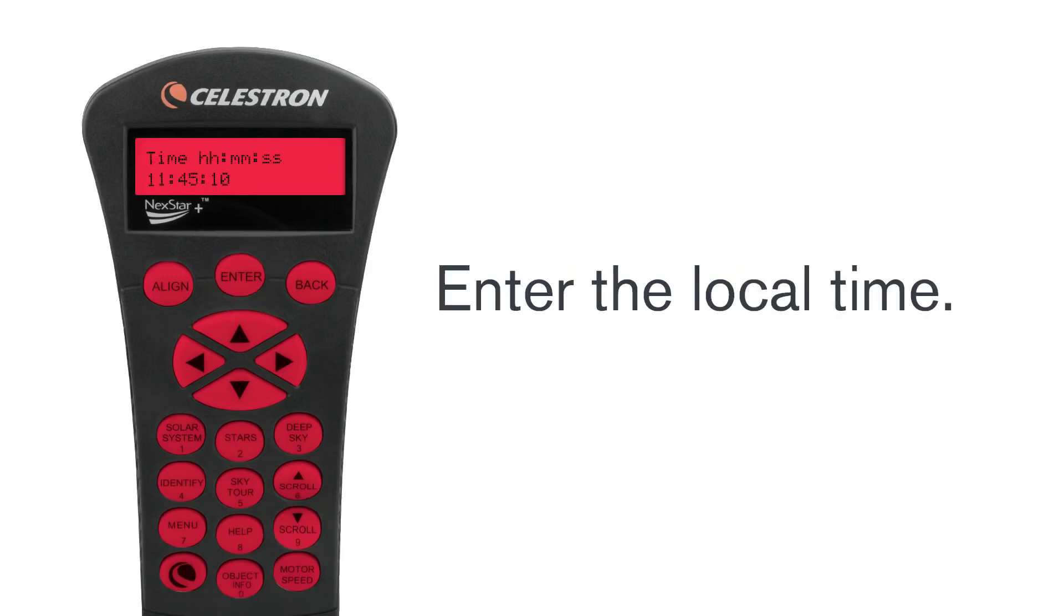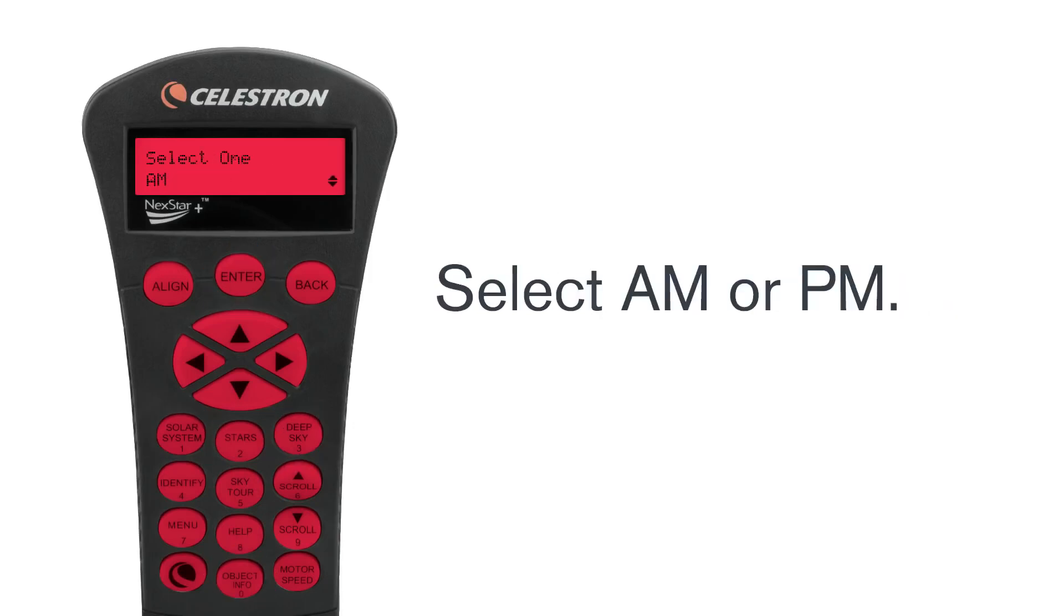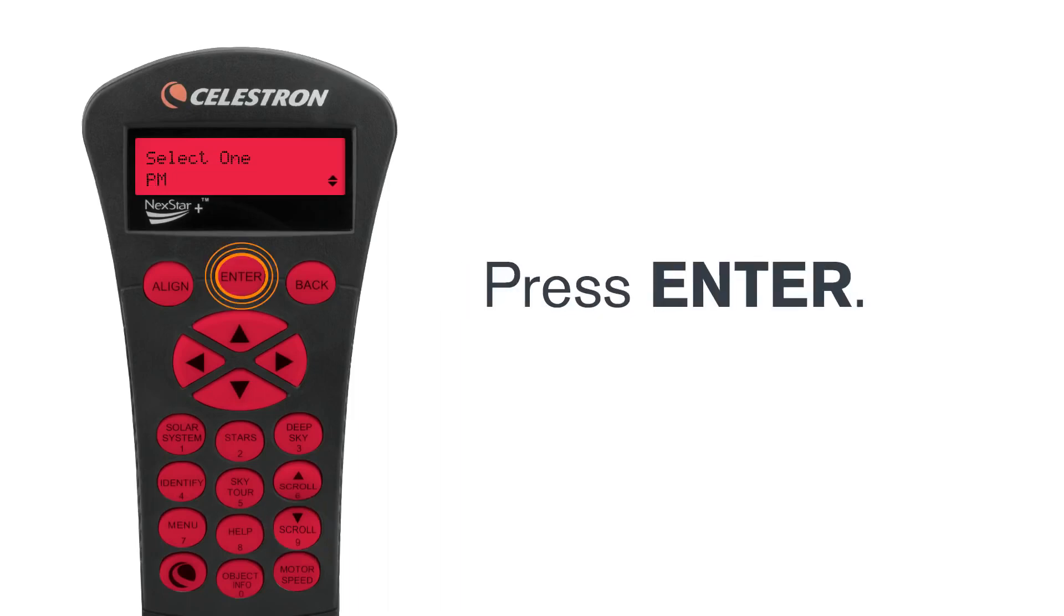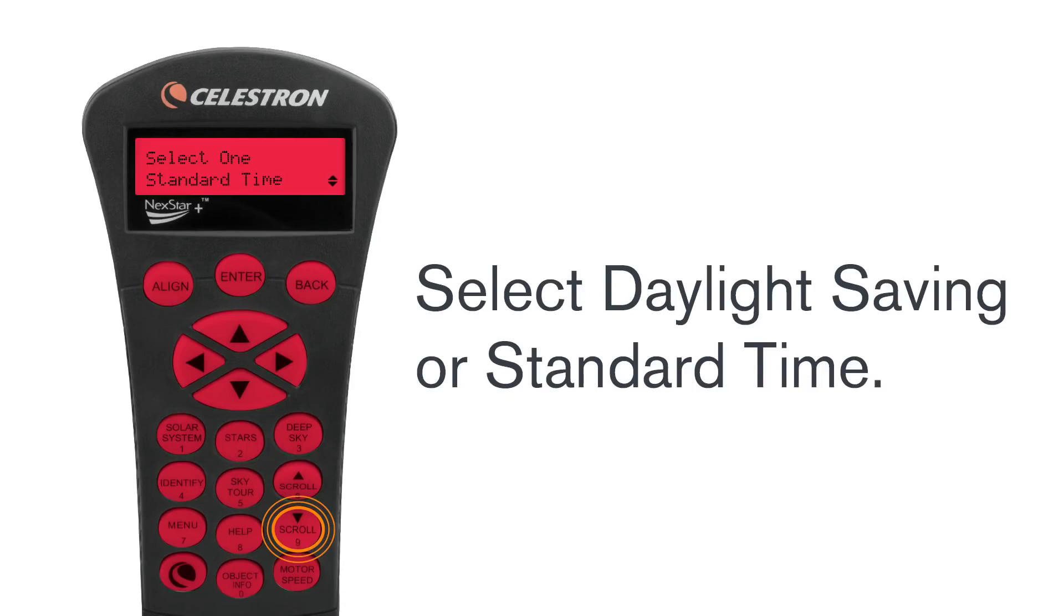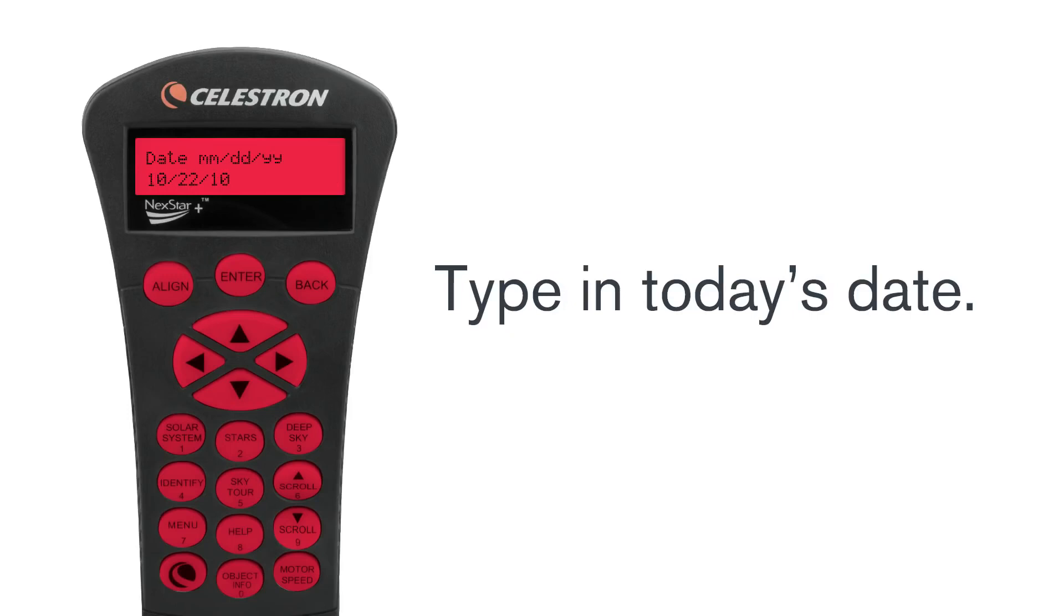You will be prompted to enter the local time in hours, minutes, and seconds. Press enter. Next, select AM or PM. Press enter. Scroll up or down to choose between daylight saving time and standard time. Press enter. Last but not least, type in today's date and press enter.